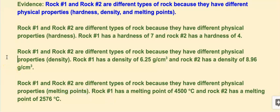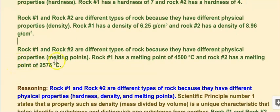Then I have my second sentence. Rock one has a hardness of seven and rock two has a hardness of four — I got this data right off the data table. For density: rock one has a density of 6.25 grams per cubic centimeter and rock two has a density of 8.96 grams per cubic centimeter. To make the superscript three on your Chromebook, hit Control and then the period; when you're done typing, hit Control-period again and it will return to normal size. The third point covers melting points: rock one has a melting point of 4,500 degrees Celsius and rock two has a melting point of 2,576 degrees Celsius.